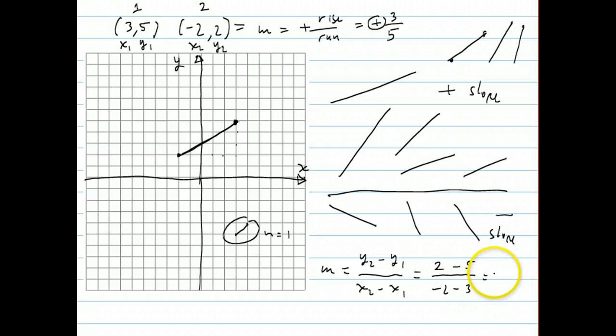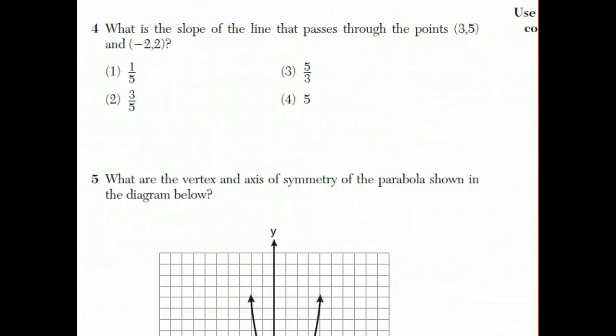Now 2 minus 5 is negative 3. And negative 2 minus 3 is negative 5. And if a fraction has a negative on the top and the bottom, we can reduce it, turn it into regular 3 over 5. So for all these reasons, the answer to question number 4 is choice 2.